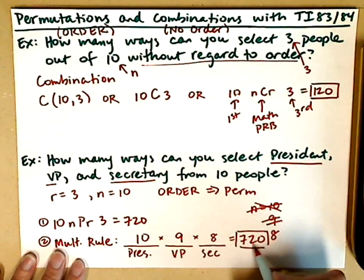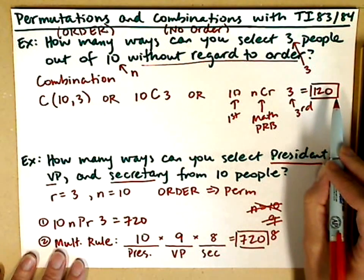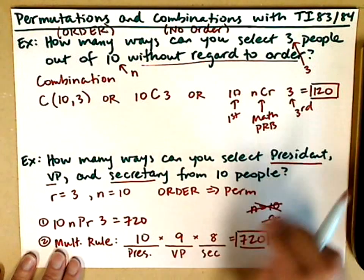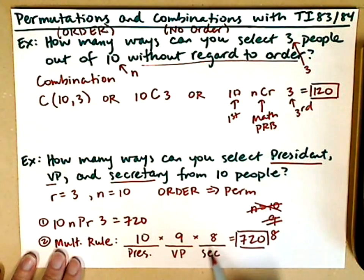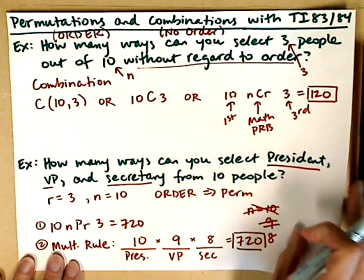Notice how 720 is much larger than 120. With permutations, you can take the same group of three people but assign them different titles, giving you many more possibilities. Let's take a look at another example.